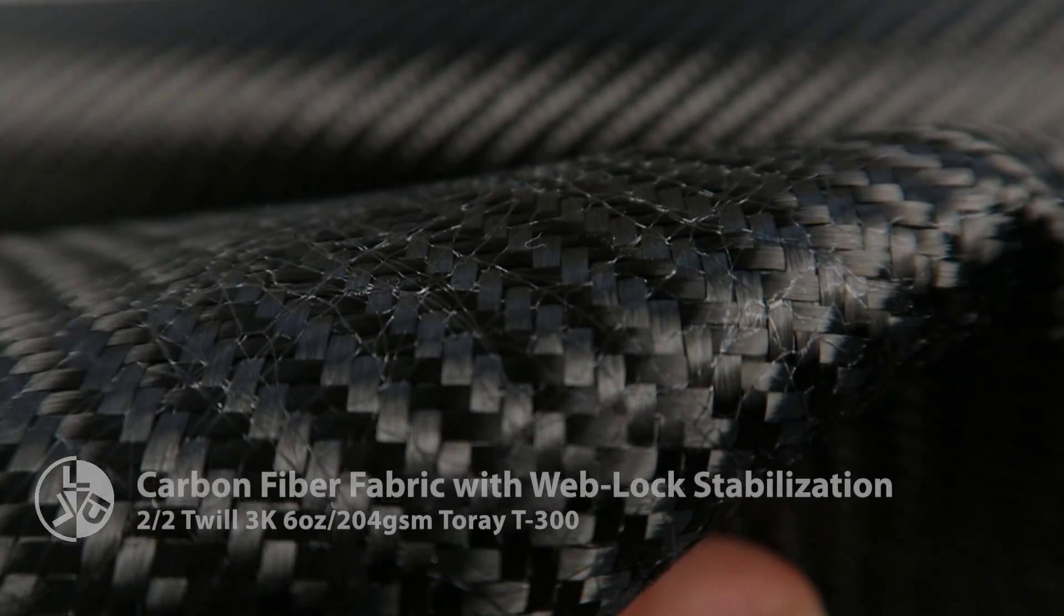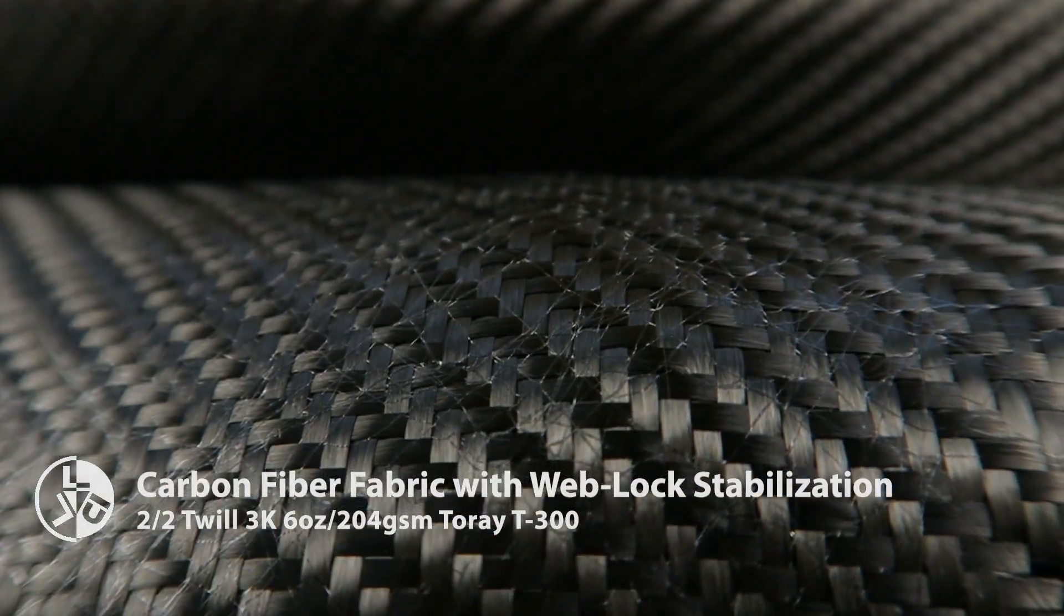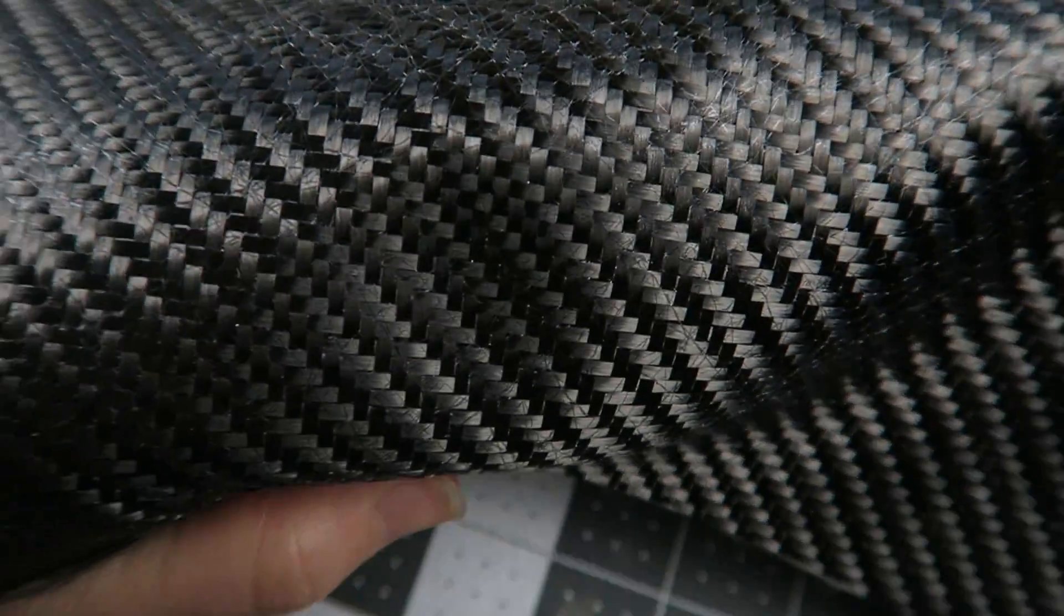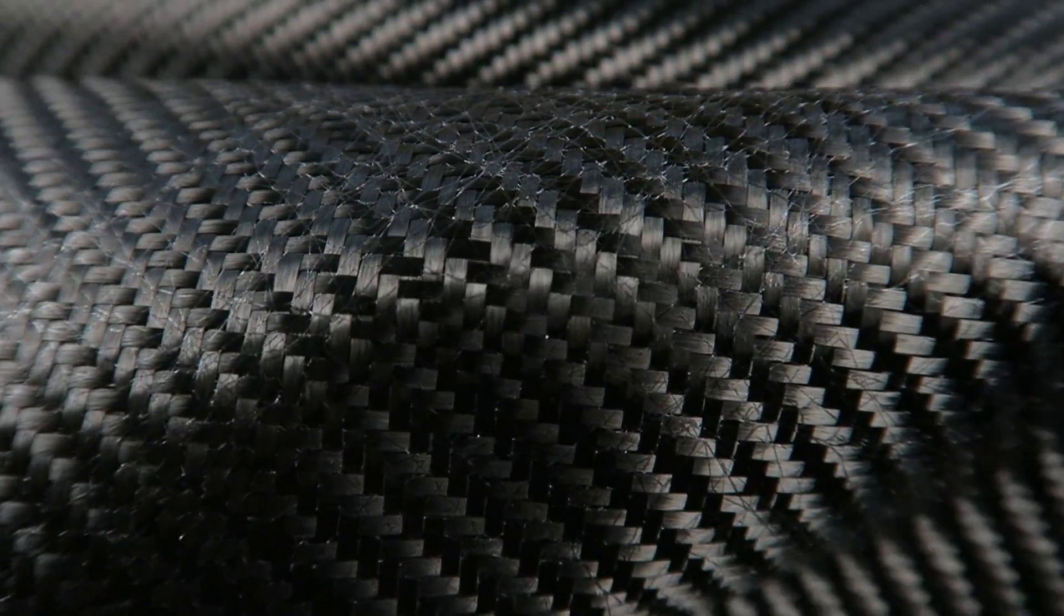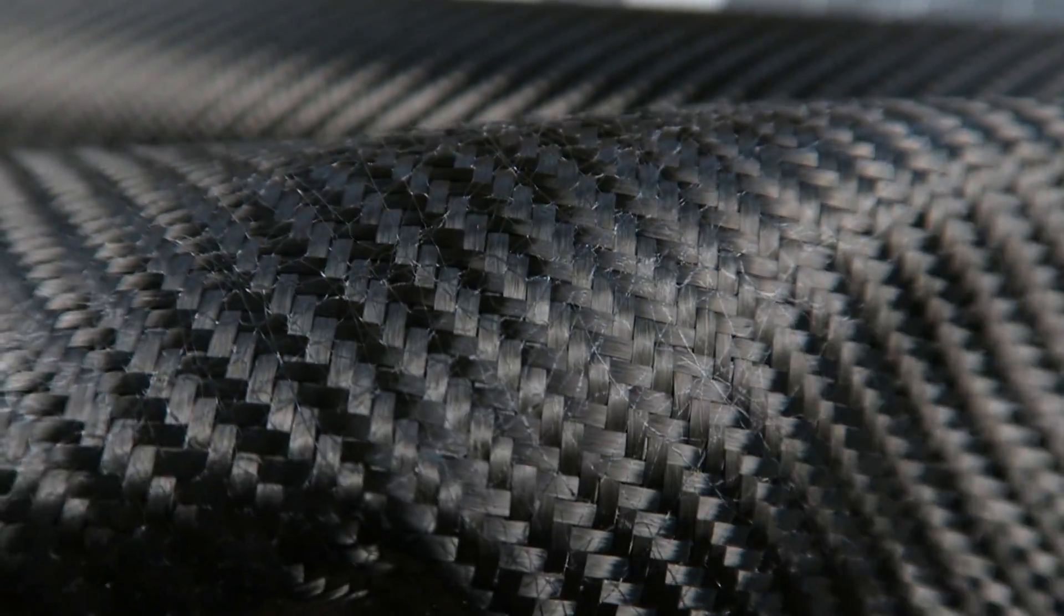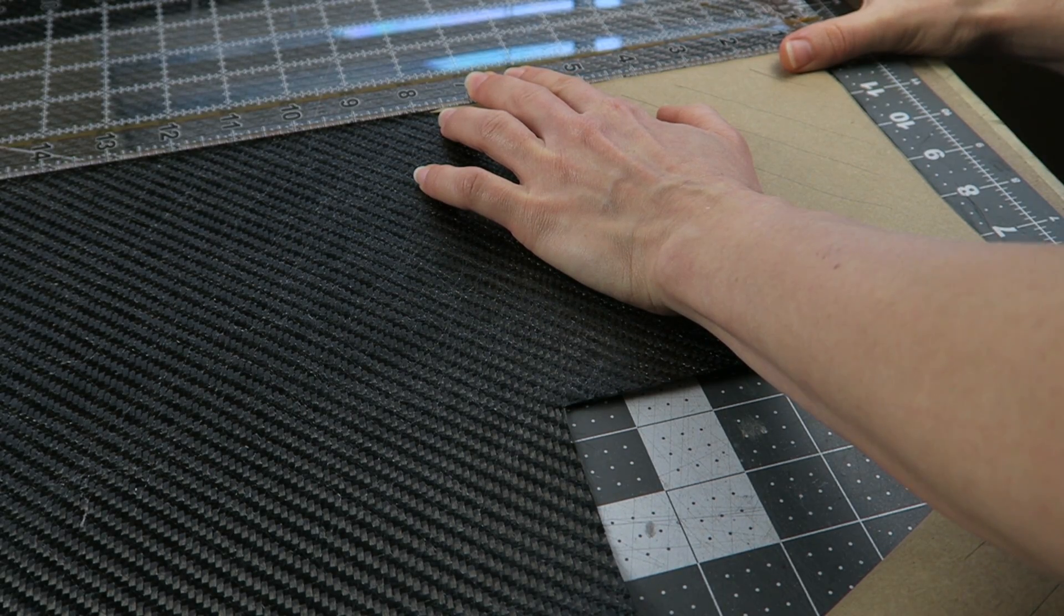This is the WebLock stabilized version. This is Composite Envision's proprietary method for doing this, so they can apply this to a variety of fabrics. There is some versatility there, which is nice, and it is aptly named. You can see these fibrous-looking patterns over that, and it is flat to the touch, but it does bind all of those pieces to each other.